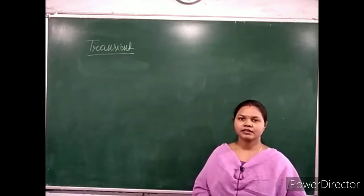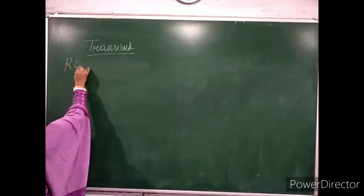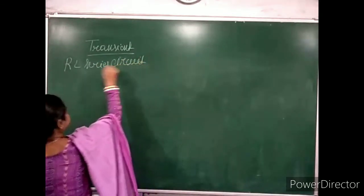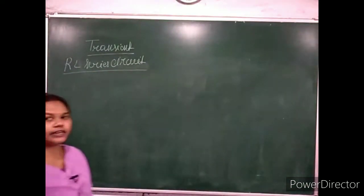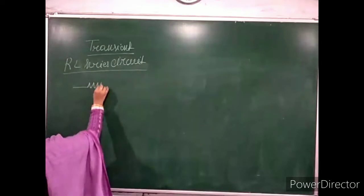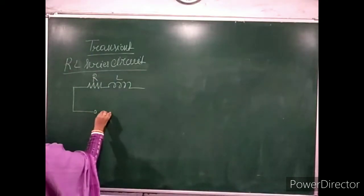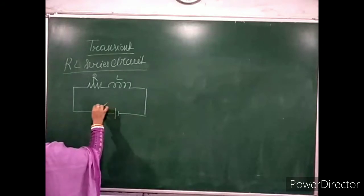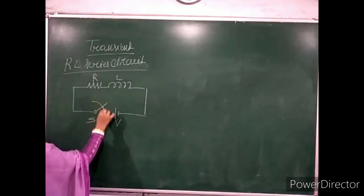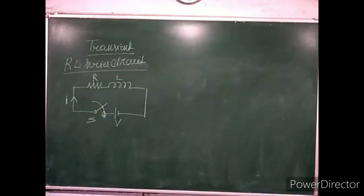Let us first discuss the transient response of an RL series circuit. When DC excitation is given to the RL circuit, we will study what the output response is. Let us take a resistor and an inductor connected in series, R and L, across a DC source of supply voltage V through a switch. Suppose at time T, the switch is closed so that current I is flowing through the circuit.